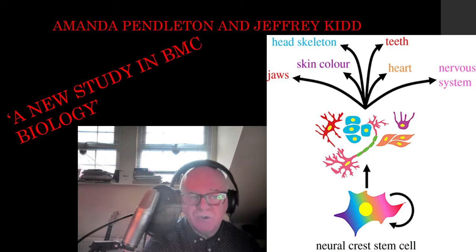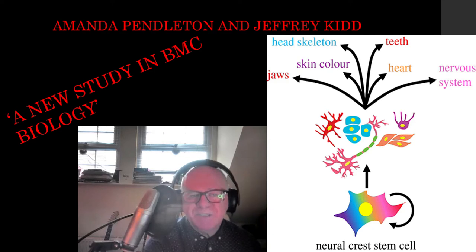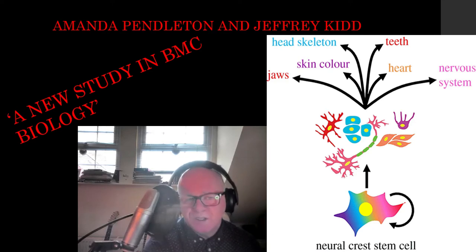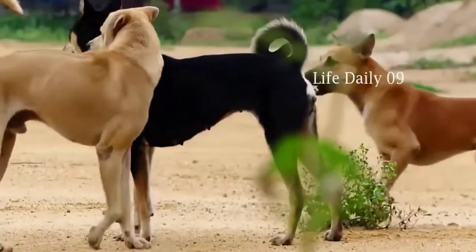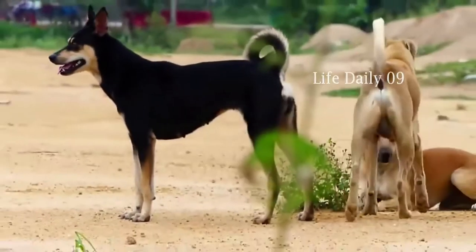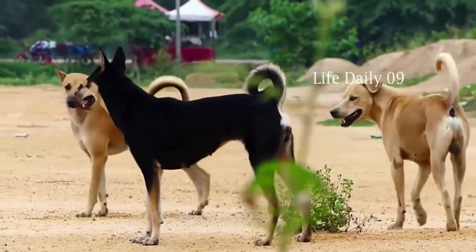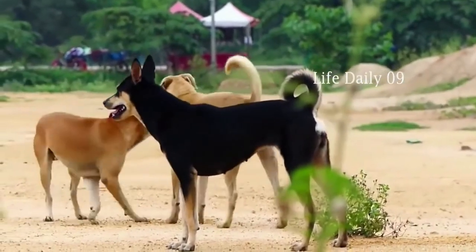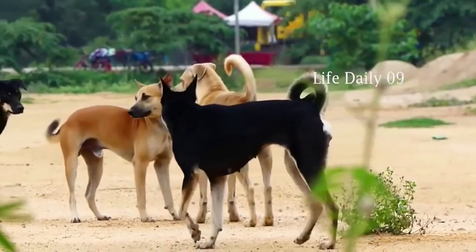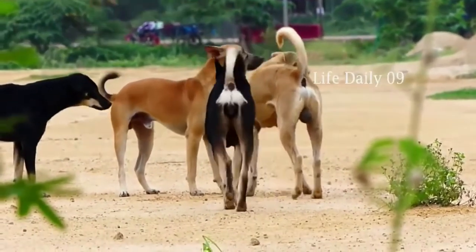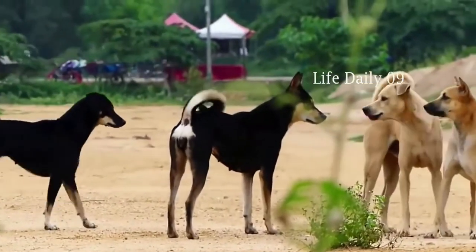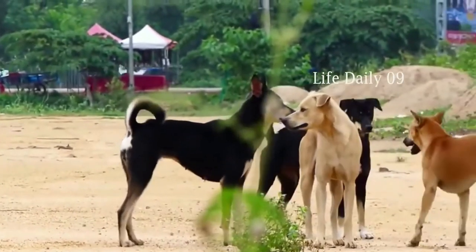Therefore, natural selection and survival of the fittest. But how do these tame cells affect phenotype traits, and what is the evidence? Dr. Pendleton and Dr. Kidd compared the genetic diversity of village dogs, which are semi-feral, survive mostly on human trash, but are domesticated. These dogs are close to dogs which were domesticated 40,000 years ago.